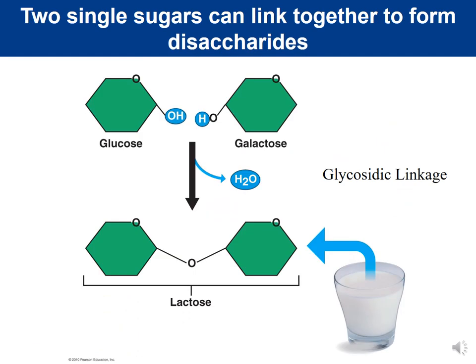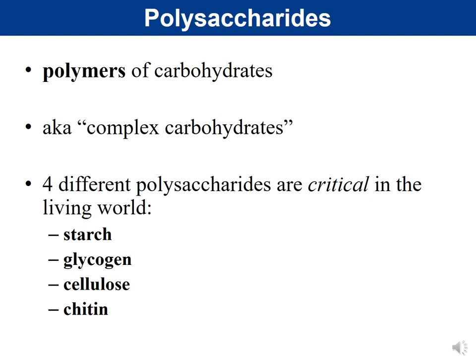To link monosaccharides together, we use a dehydration reaction — removing a water molecule to covalently link the two sugars. The bond formed is called a glycosidic linkage ('glyco' referring to sugar). Linking glucose and galactose together via a glycosidic linkage forms the disaccharide lactose.